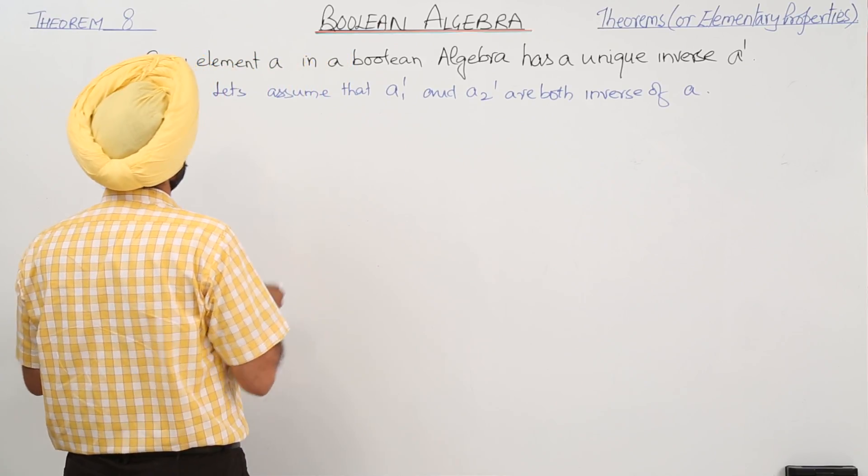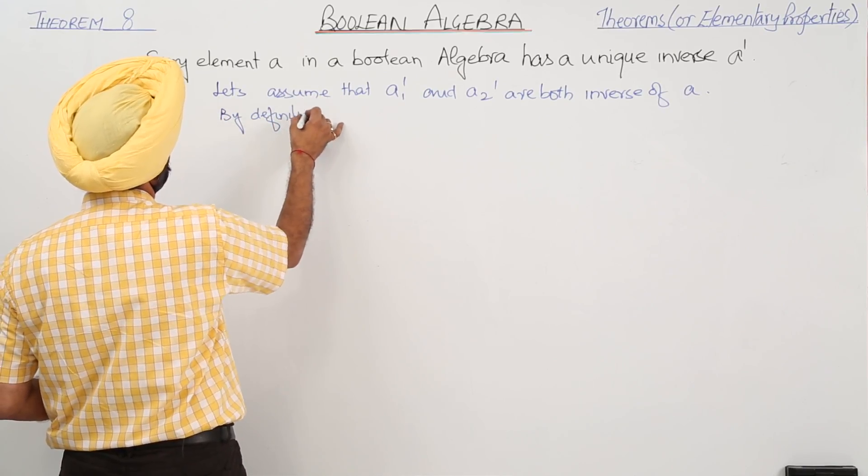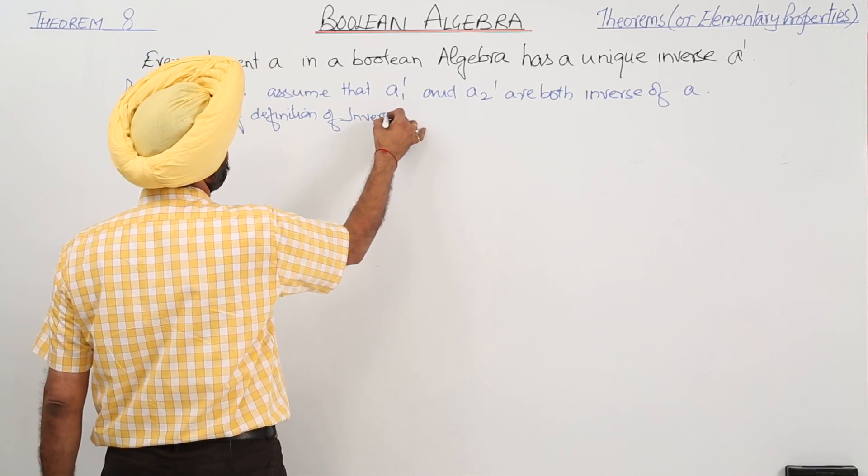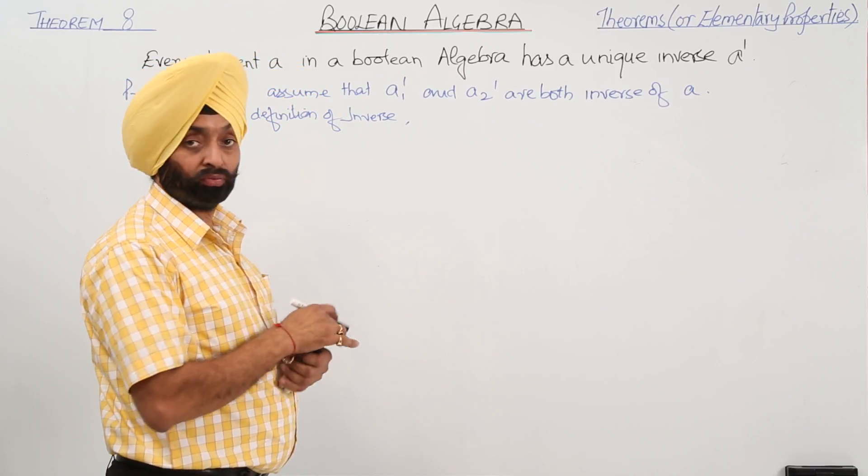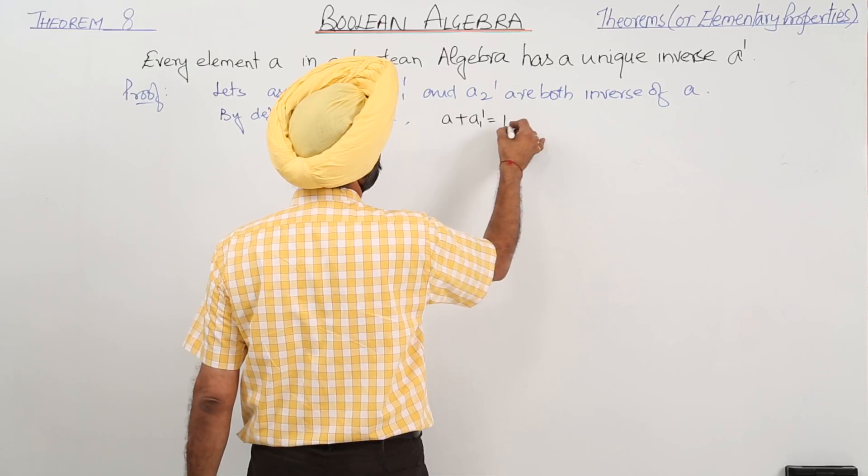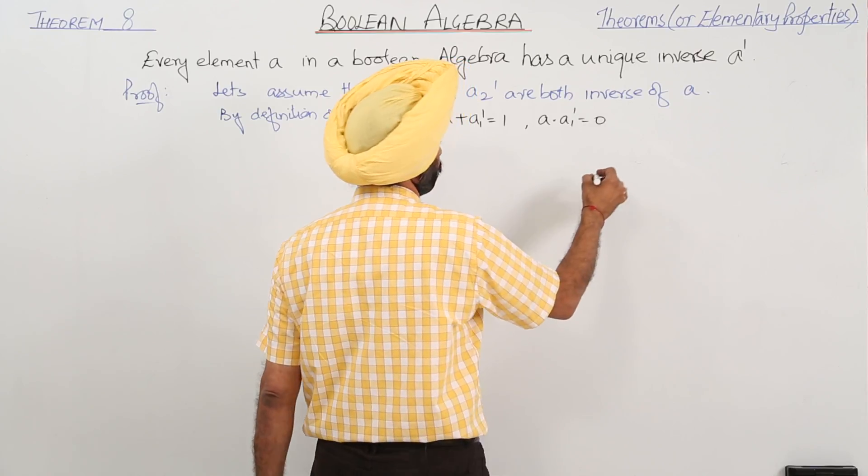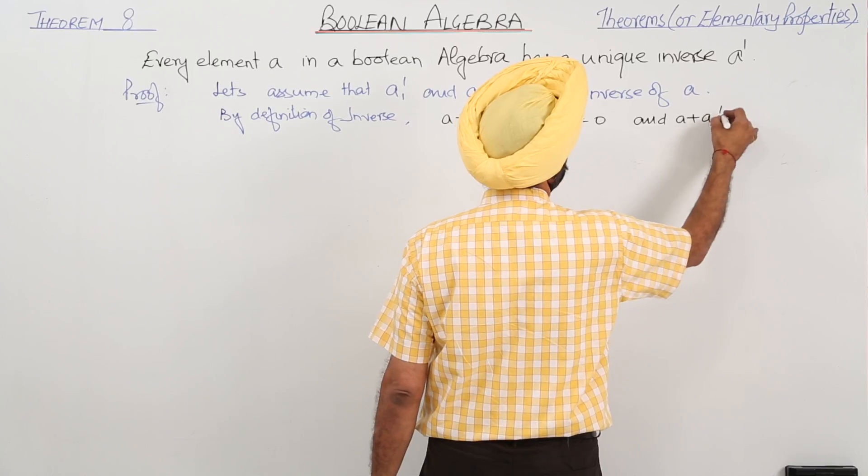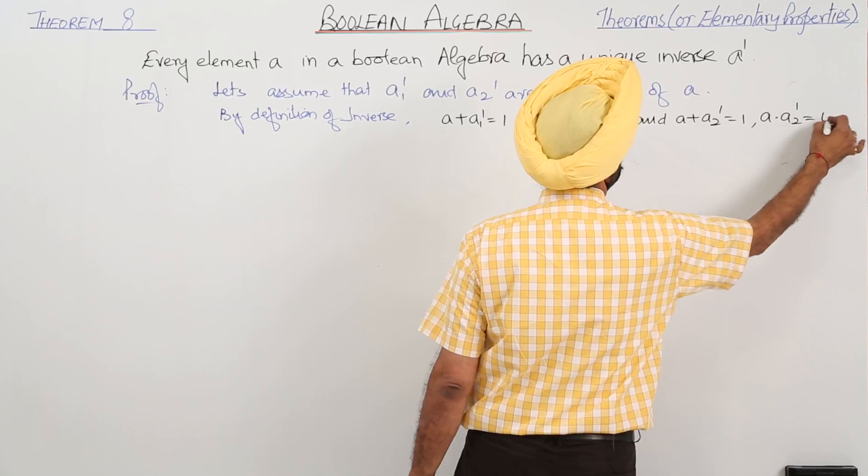By definition of inverse, or you can also write it complement, by definition we can write: A plus A1 inverse equals 1, A dot A1 inverse equals 0, and A plus A2 inverse equals 1, and A dot A2 inverse equals 0.